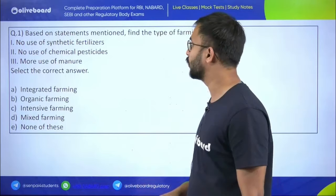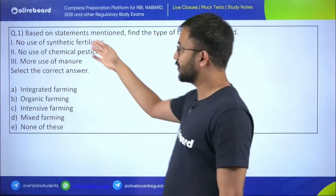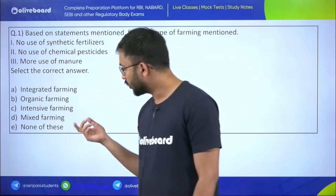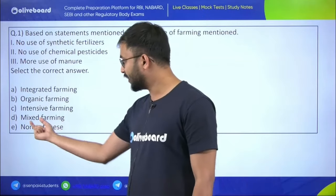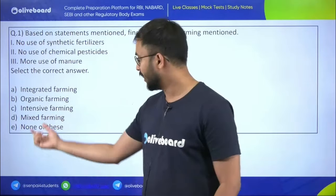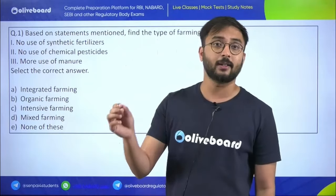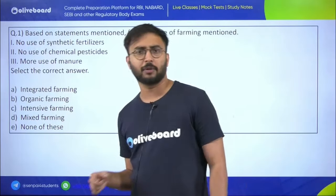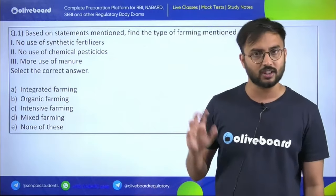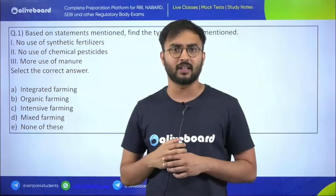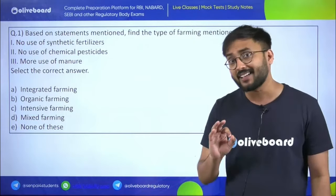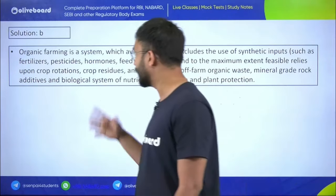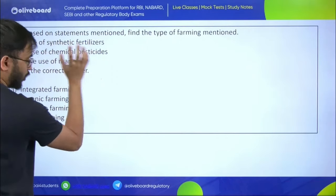First statement: no use of synthetic fertilizers. Conventional farming doesn't restrict chemical use; mixed farming uses chemical fertilizers; intensive farming uses them heavily; integrated farming doesn't specifically prohibit them. Therefore the answer is organic farming — no synthetic or chemical inputs, and more use of manures from organic sources is the predominant feature of organic farming.